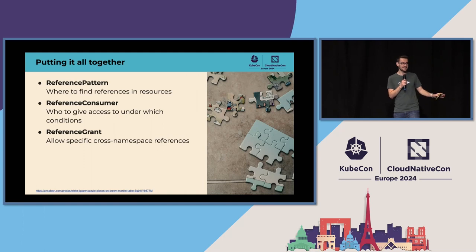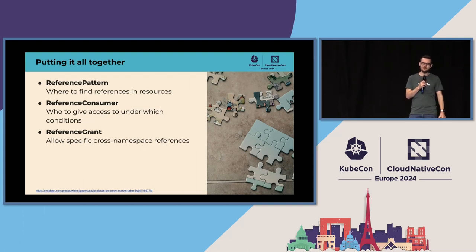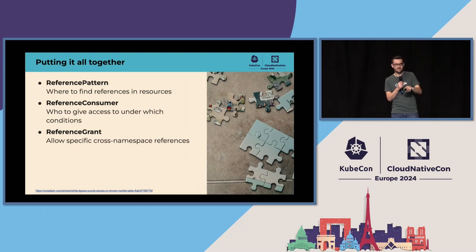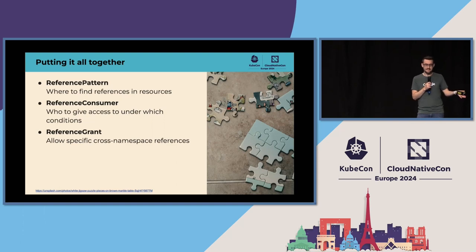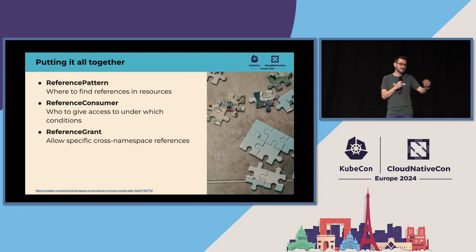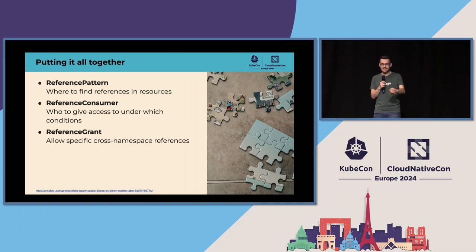Let's take a high-level view. There's the reference pattern — that's the API author defining where references come from, and optionally where segmentation is. Then there's the reference consumer — the controller author. Instead of deploying an Ingress controller with read access to all secrets, you deploy one of these instead, saying who to give access to and under which conditions. For example, my gateway controller supports references from gateways to secrets for the purpose of TLS serving. And then optionally, if you do want cross-namespace references, there's reference grant.